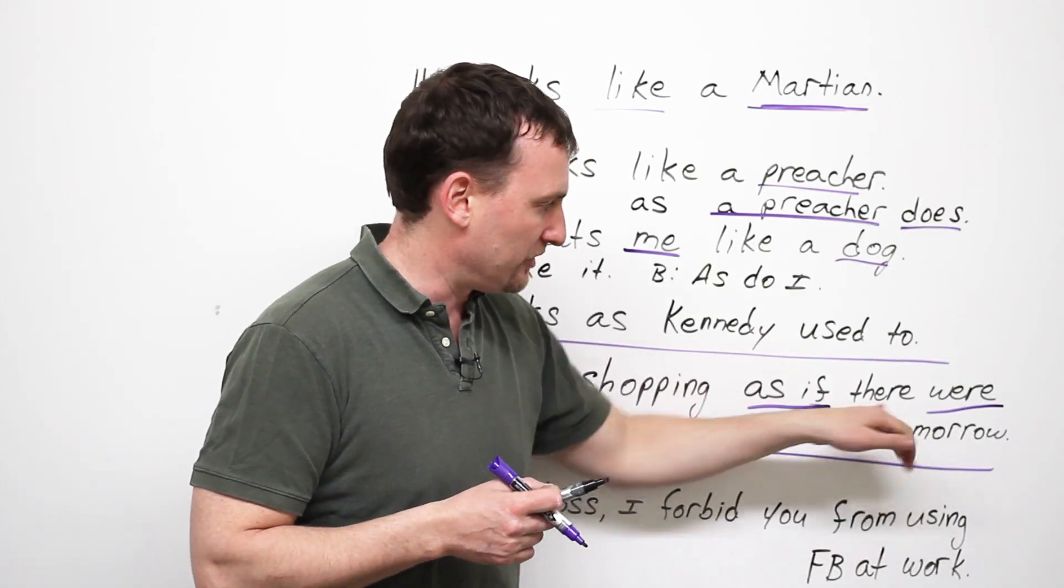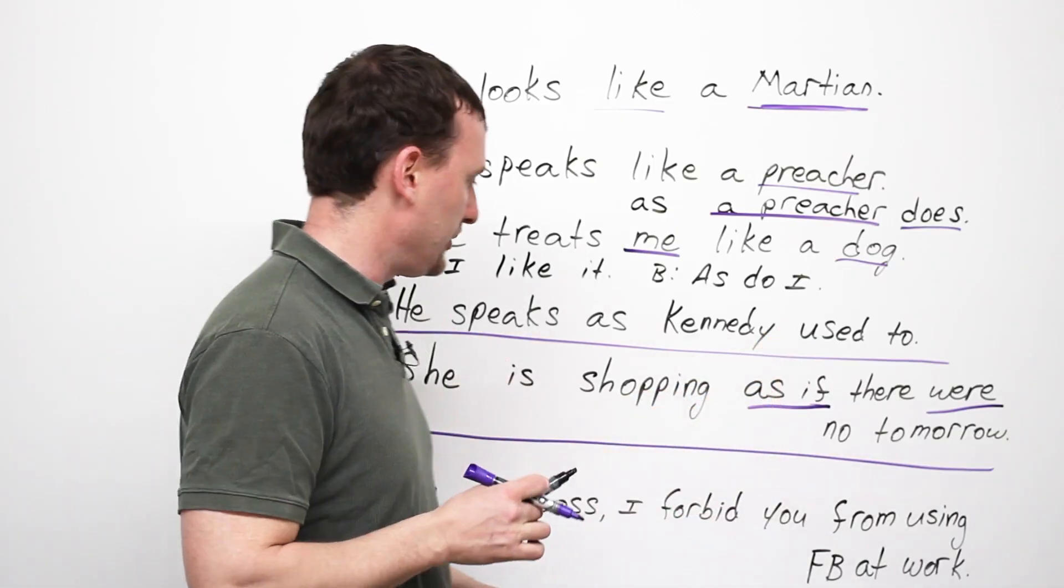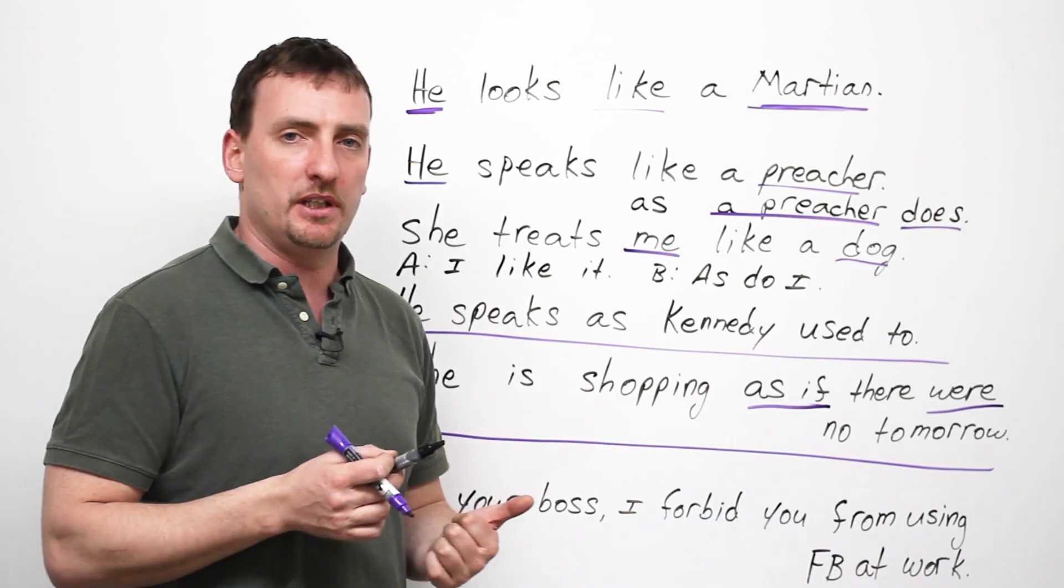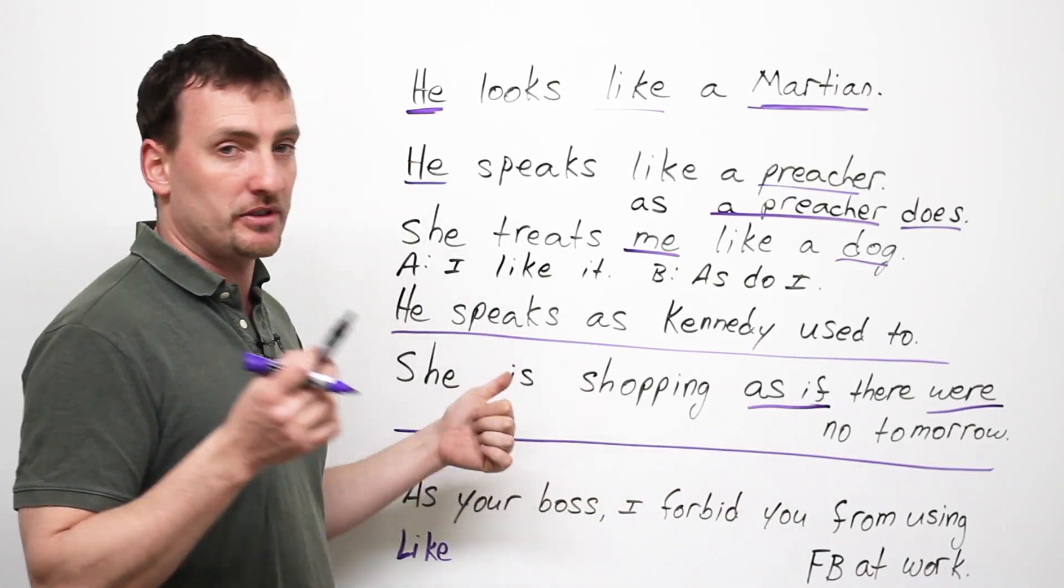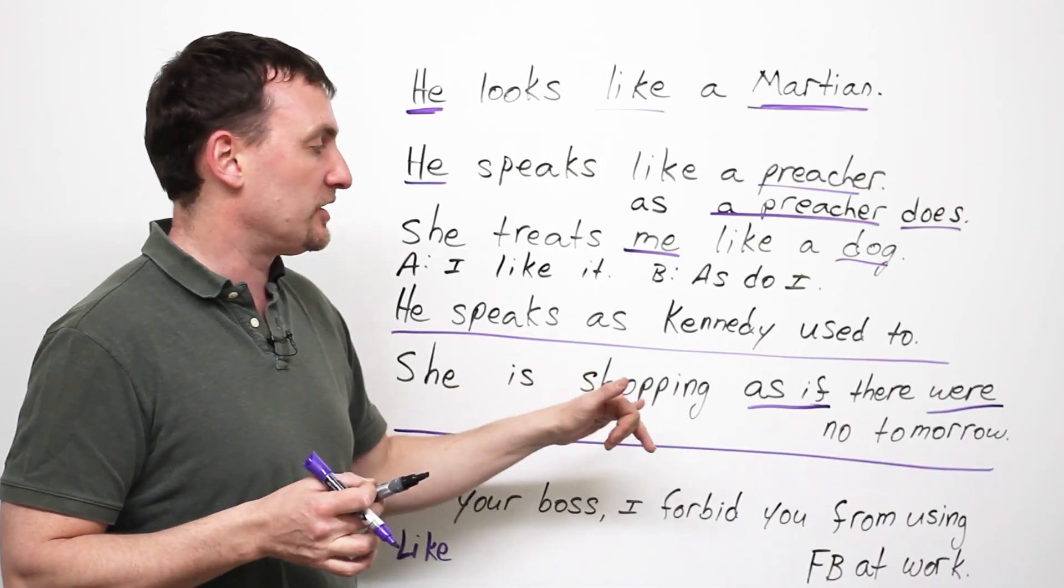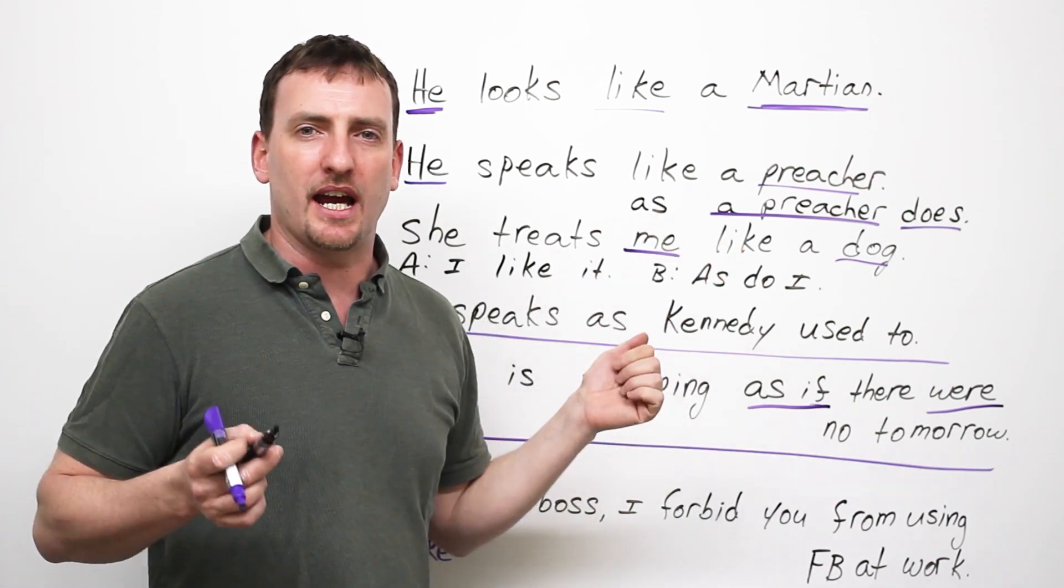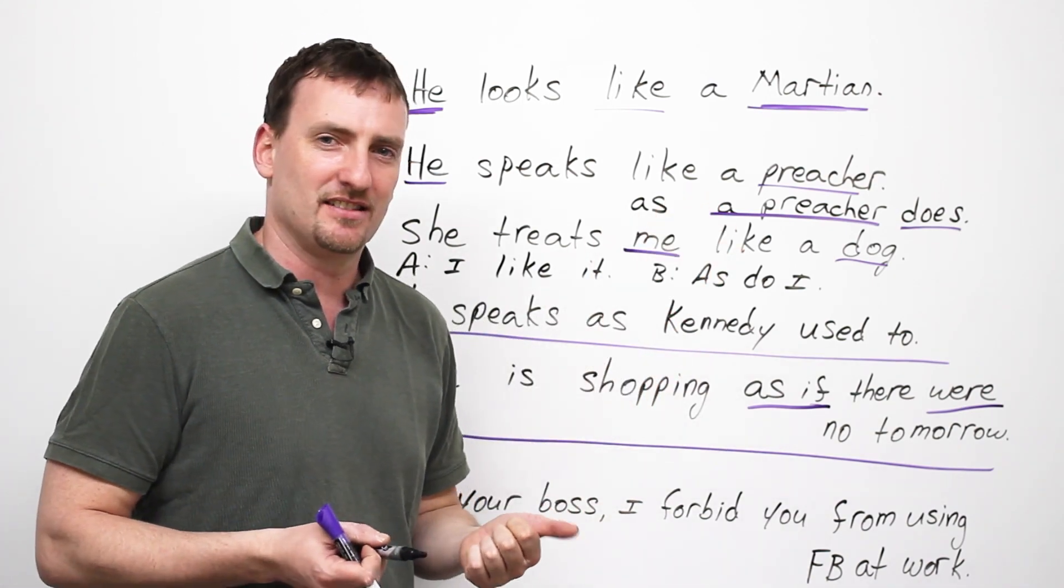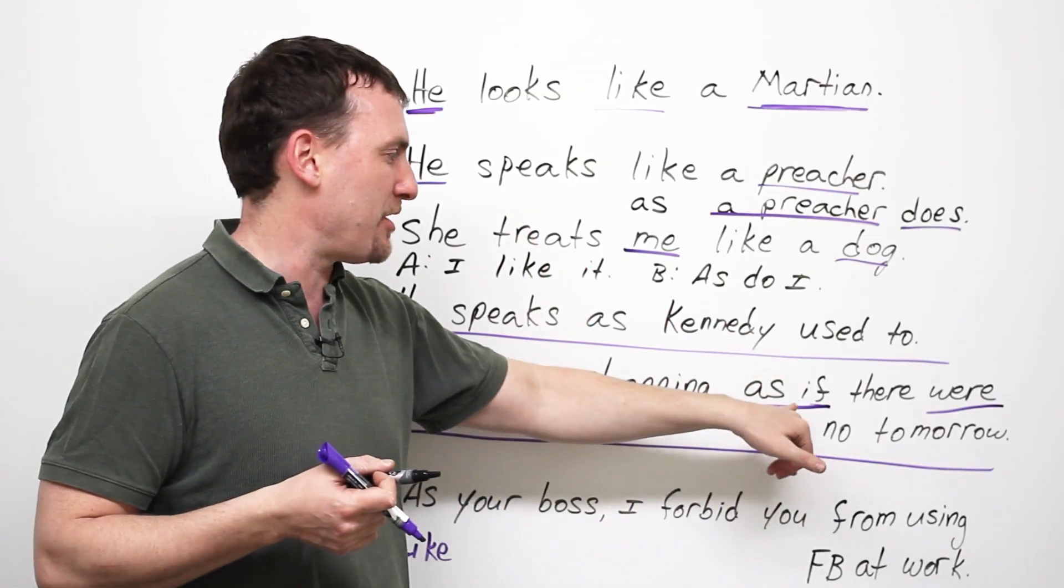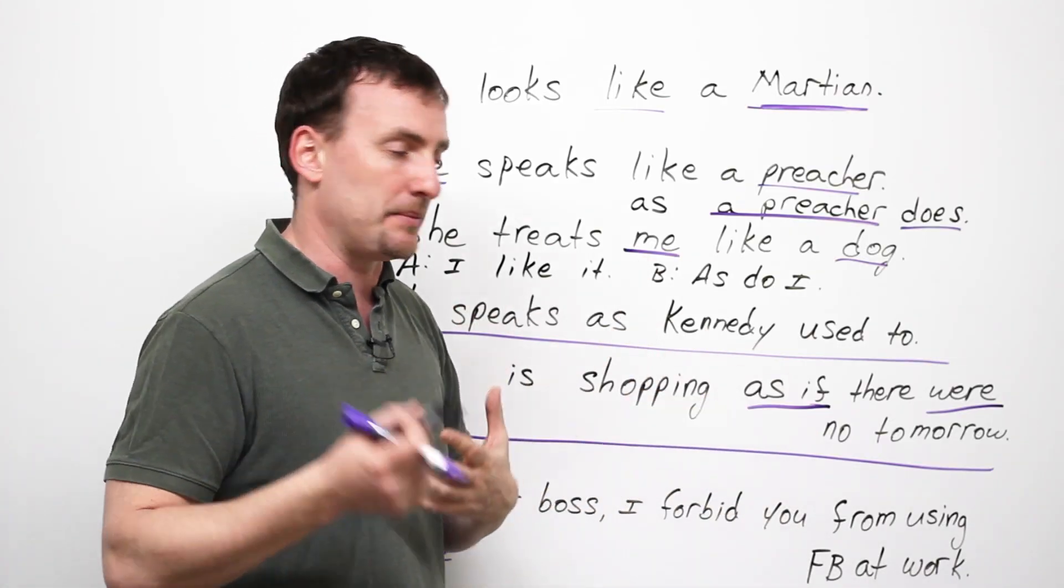Again, there's no real clause here because of the inversion, but just remember it's an unreal situation. But having said that, most native speakers will not say this. Most, or I don't know most, but many native speakers will say, she is shopping like there's no tomorrow. What does it mean? Tomorrow, everybody's going to die. So, she wants to get as much things today as she can. It's a very common expression. Most people understand this expression as like. Like is incorrect, but acceptable.